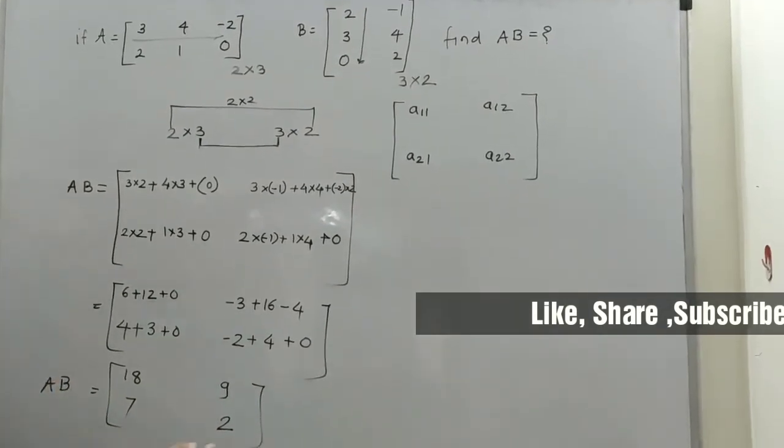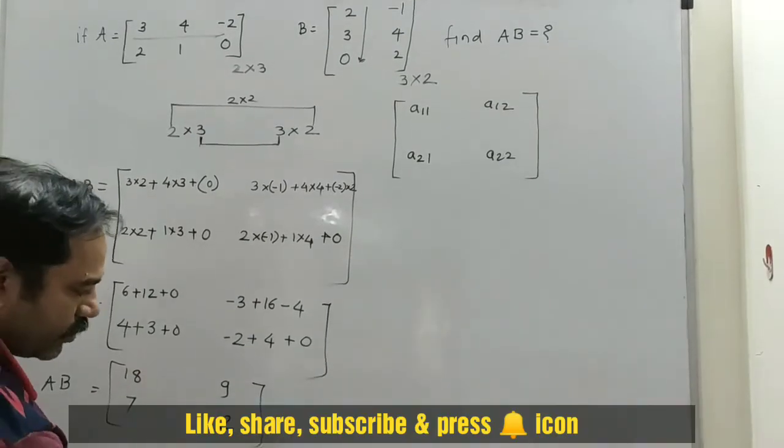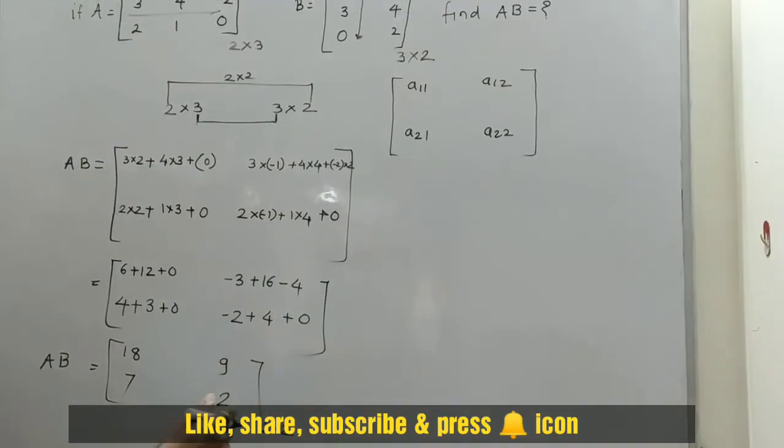The AB matrix has order 2 by 2, with 2 rows and 2 columns. So this is the answer of AB.